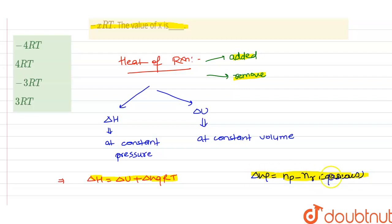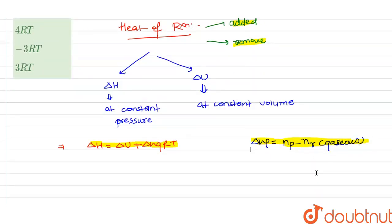This is the formula of delta ng. Now here in the question it has been given we have to find with respect to delta H minus delta U, it will be delta ng RT.